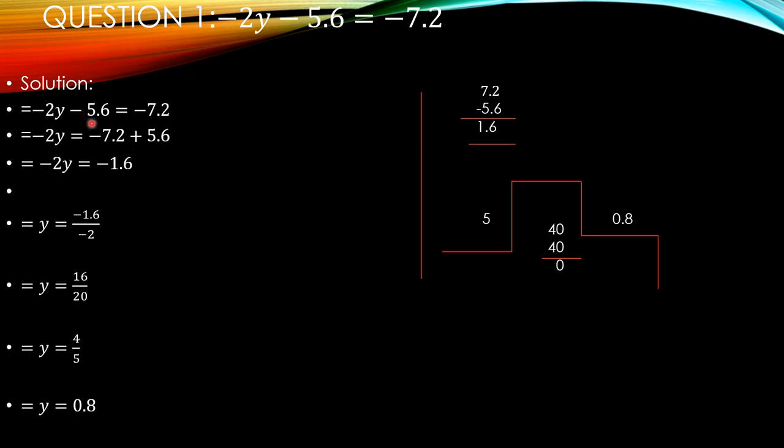Minus 5.6 is on the left hand side. When we move on the right hand side, it becomes plus. Now, minus 7.2 plus 5.6. These are different signs, so we are subtracted in the rough column. 7.2, 5.6. These are decimal fractions. Decimals must be overlapping. 12 minus 6 is 6, 6 minus 5 is 1. It is now minus 1.6 because of the greater term, minus 7.2. So we are putting minus sign.